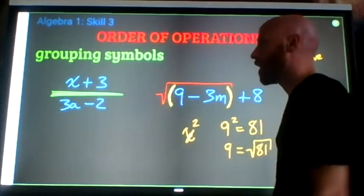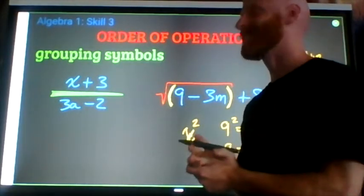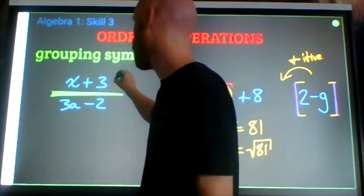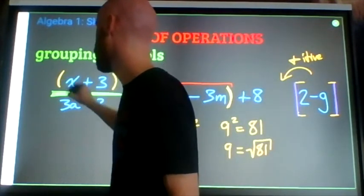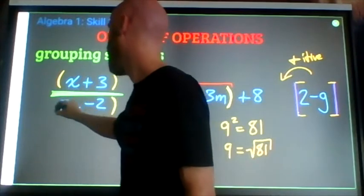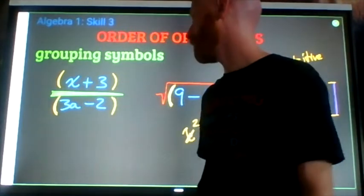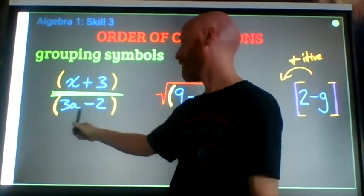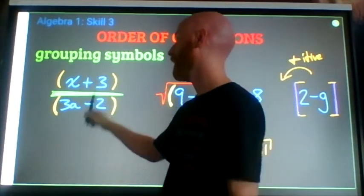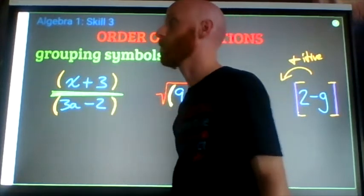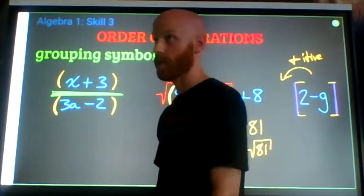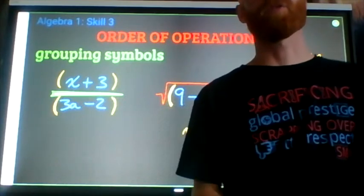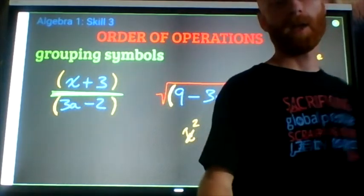And this last one, fraction bar, a fraction bar sets up two sets of parentheses that are understood. There are understood parentheses around the numerator and understood parentheses around the denominator. And then it also, after you finish simplifying what is in the denominator, after you finish simplifying what's in the numerator, acts as a division symbol. And then you divide those things. So those are three other types of grouping symbols that we're going to deal with this year.